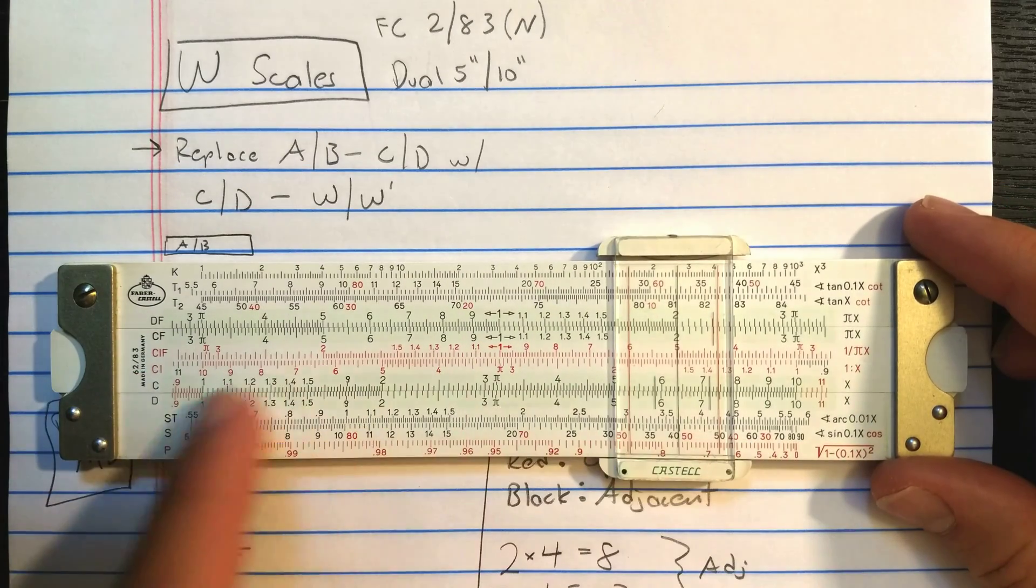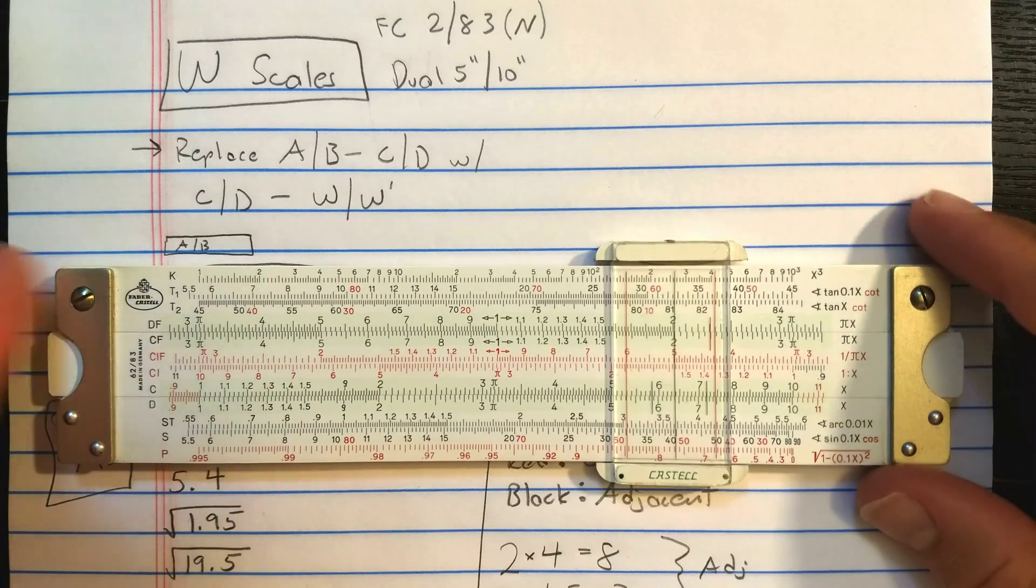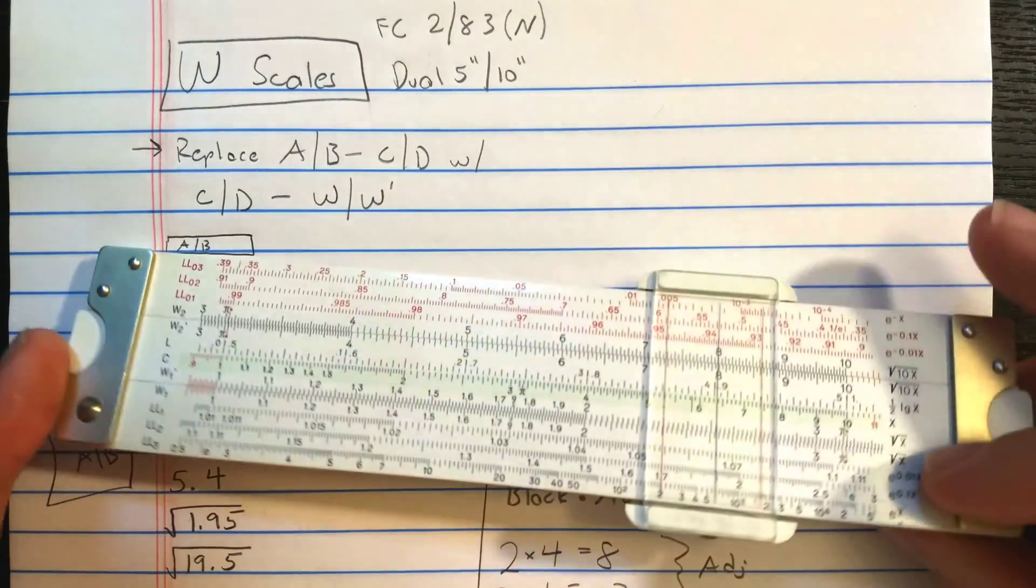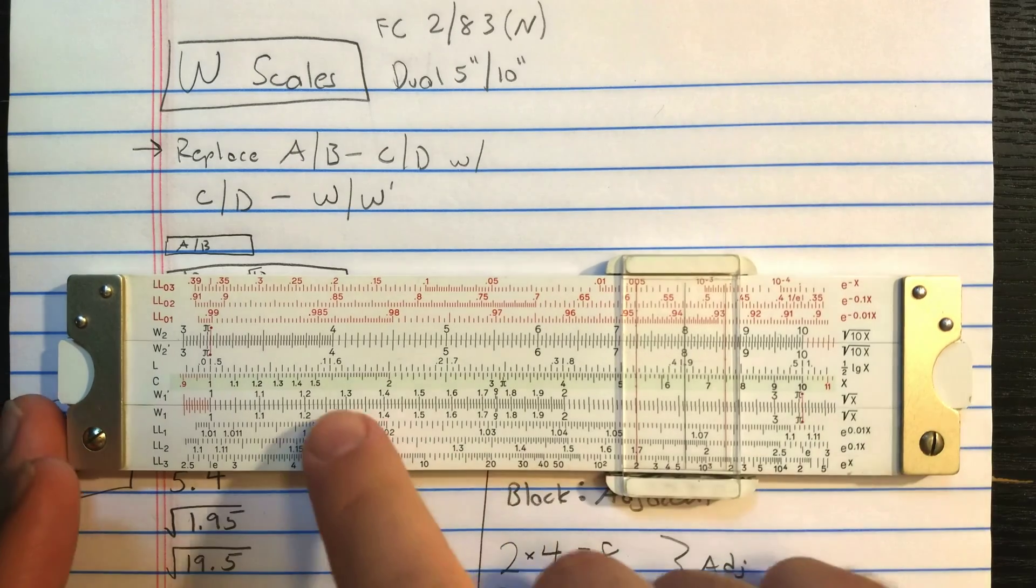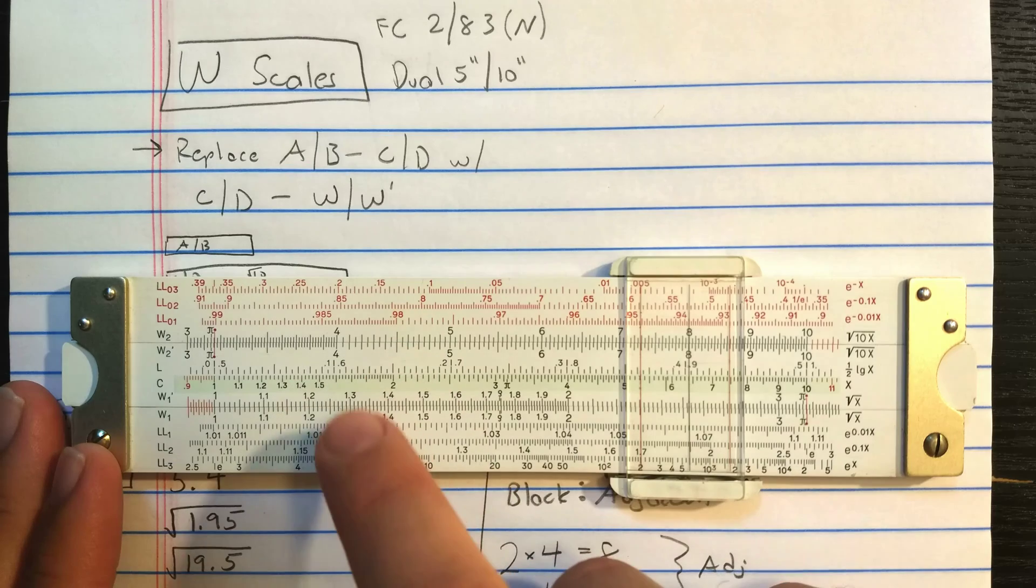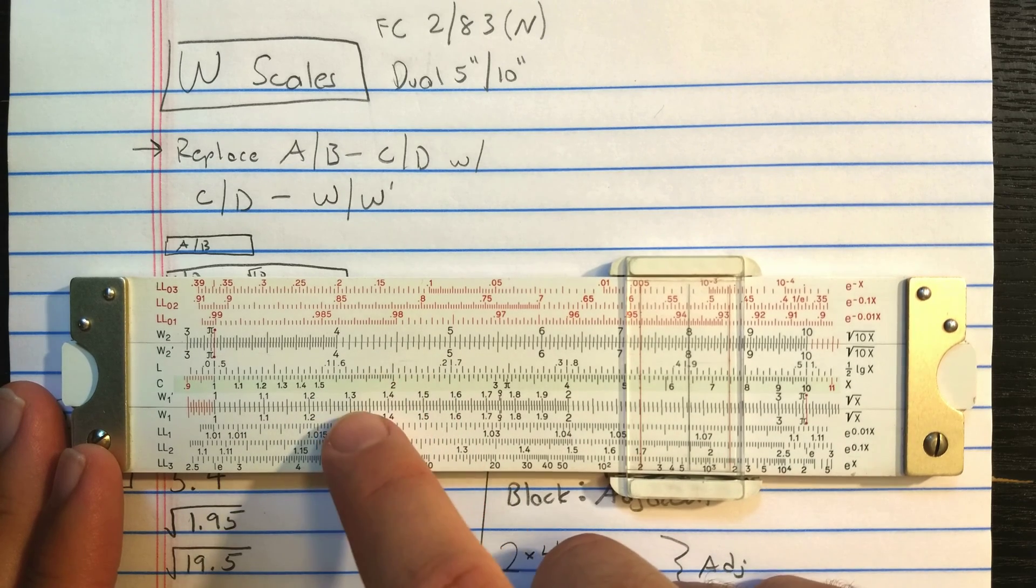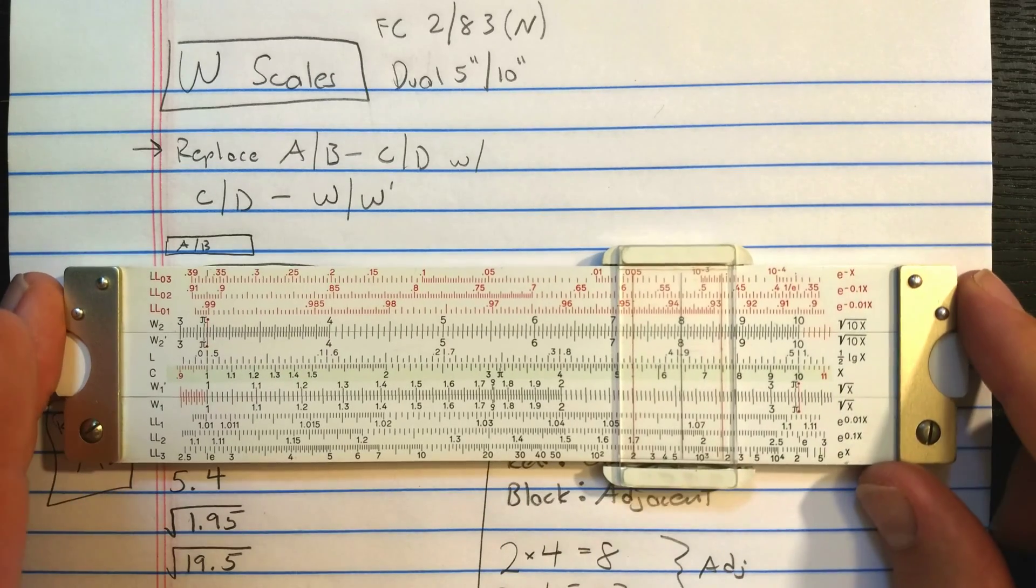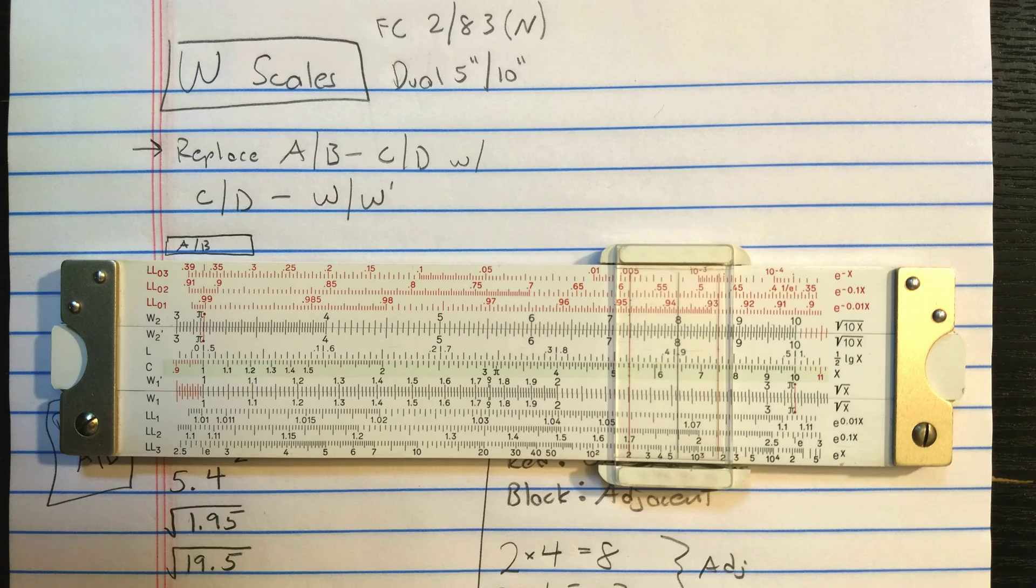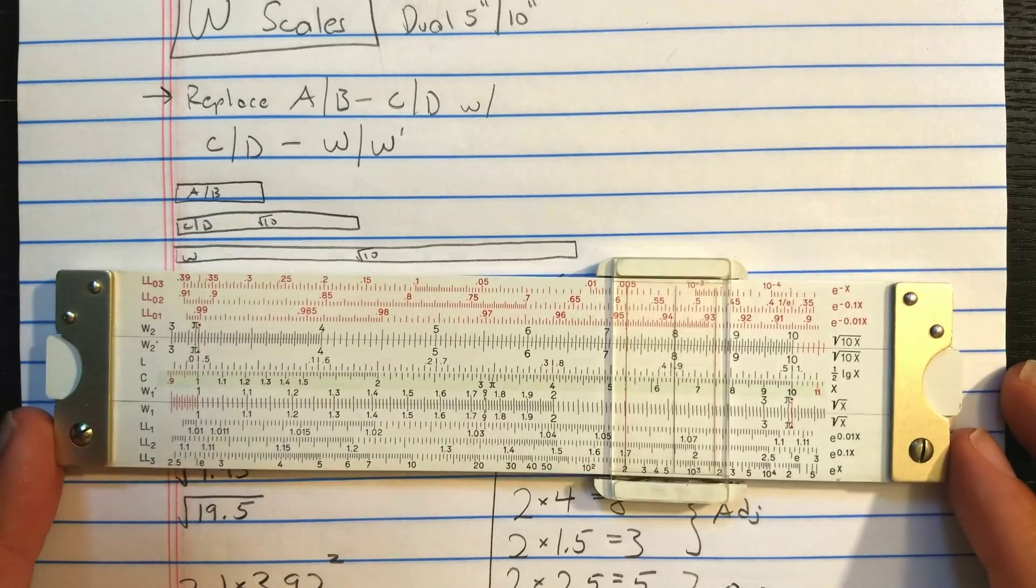The front side of this slide rule is fairly standard. Folded scales, trig on the base, K scale. But on the reverse, you have these W scales. W1 and W2 on the base, W1' and W2' on the slide. W1 and W1' are identical, as are W2 and W2'. Now, you'll notice there's no A and B scale on this slide rule. And the intention is that the W scales are the replacement for AB on this slide rule.